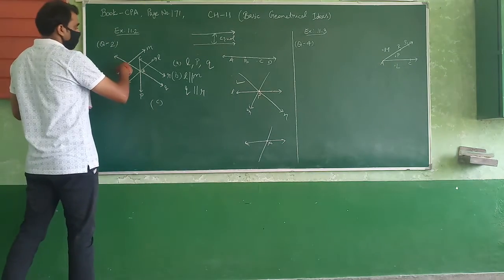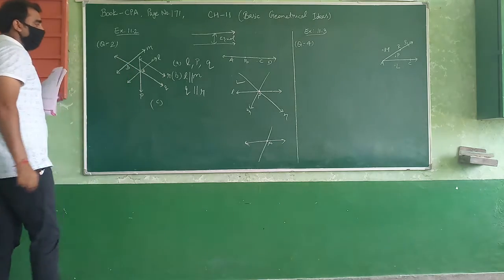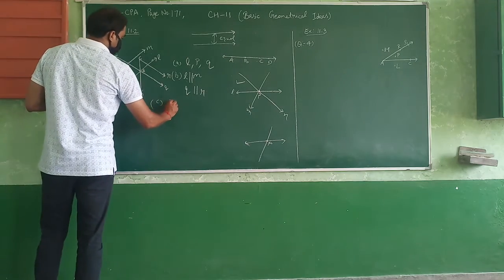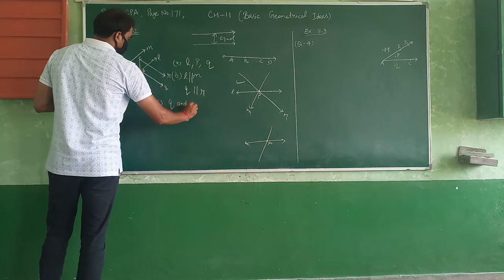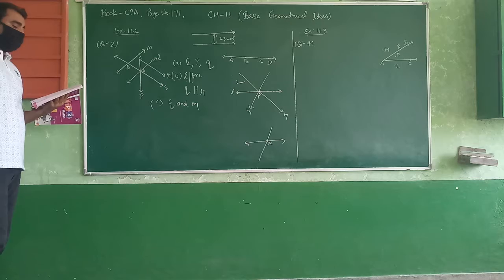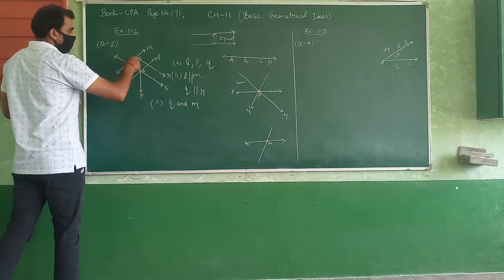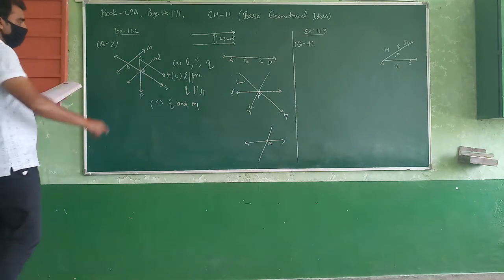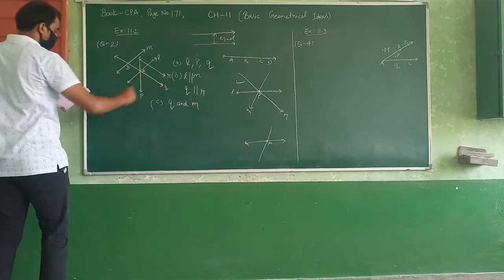Okay, now C: Name the lines intersecting at B. Intersecting at B, name the lines Q and M. Question D: Name the lines intersecting at C. Name the lines P and R.